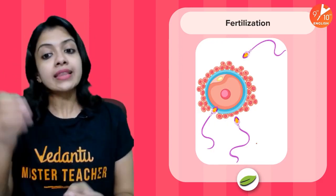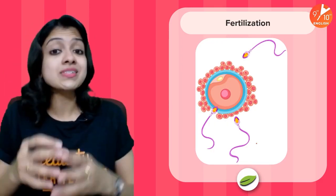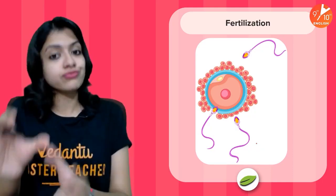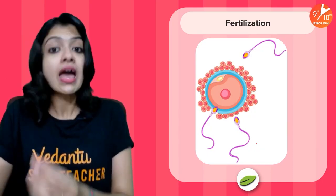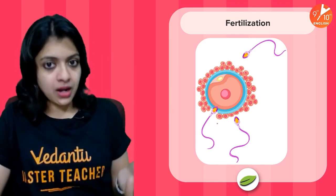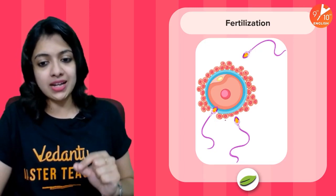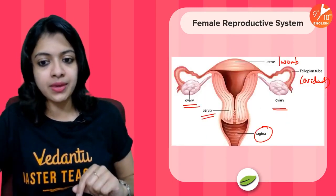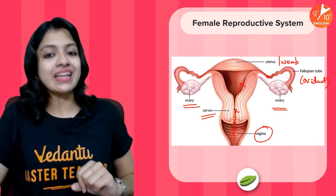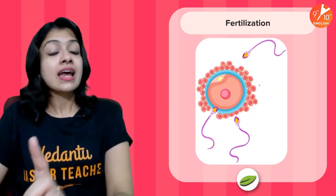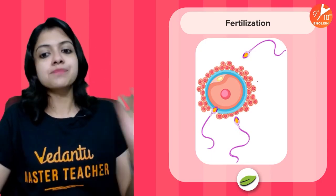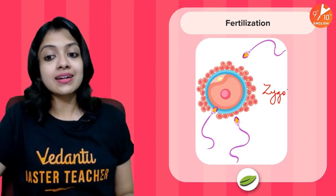Now, fertilization — where the sperm meets the egg. If sperms are released inside the female reproductive tract during a sexual act, and if the timing corresponds with the ovulation period, meaning there is an ovum present in the fallopian tube, the sperms swim further and further up through the female tract. All the millions of sperms move until they meet the ovum inside the fallopian tube. At the end, it is only one sperm which meets the egg — this is called fertilization.